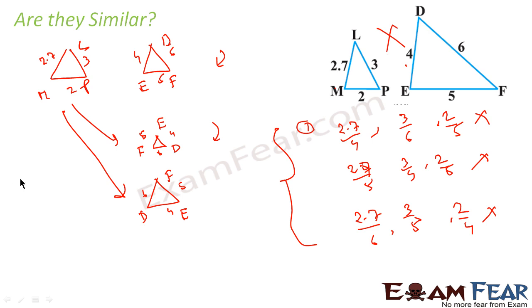The last example we solved, we can do it this way also. We can flip the triangle and get 3 different versions. We saw that the first version was not matching, but for the second version in the last example, the sides were proportional. This is one way: you keep the first triangle constant, flip the second triangle into 3 different versions, and compare the sides. If all sides are proportional in any of the cases and the angles are also equal, then we can say that the triangles are similar.